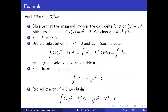For example, find the integral of 2x times x squared plus three to the positive fourth dx. First, observe that the integrand involves the composite function x squared plus three raised to the fourth power, with inside function g of x equals x squared plus three. We choose u equals x squared plus three. Second, we find du equals 2x dx.